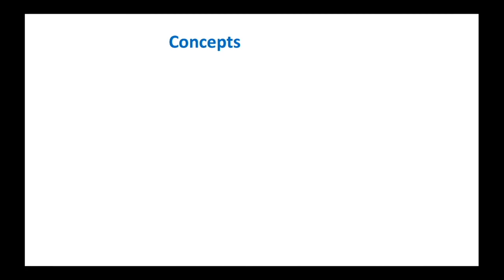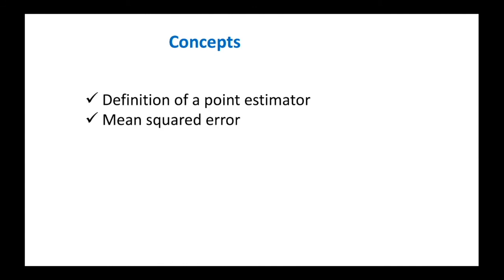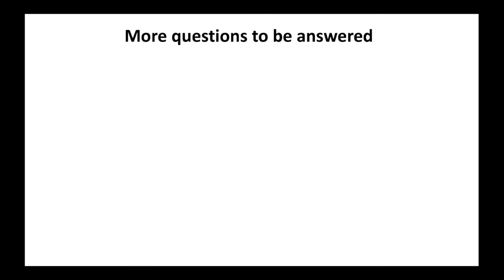This is all for this video. Let us recap what we have learned today. We have defined what a point estimator is. We have seen how to measure the goodness of the estimator looking at the mean square error. We have introduced the Cramér-Rao lower bound. And finally, we have defined the maximum likelihood estimator and we have seen why it is so important.